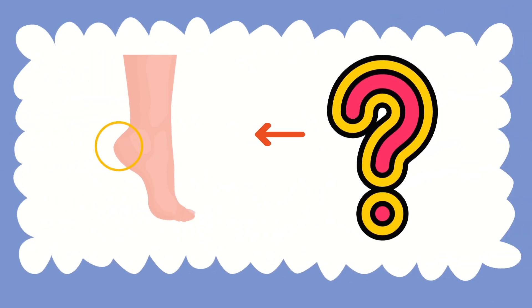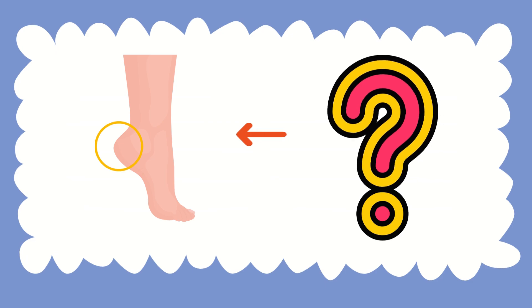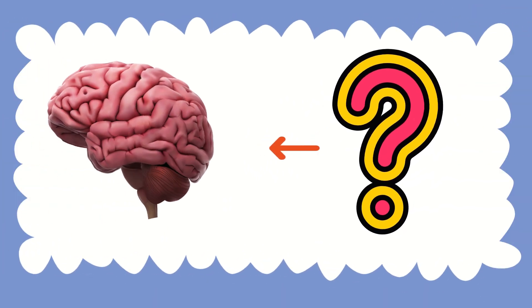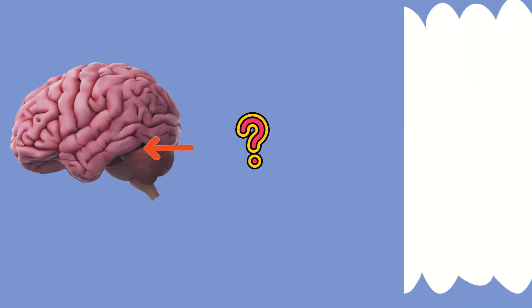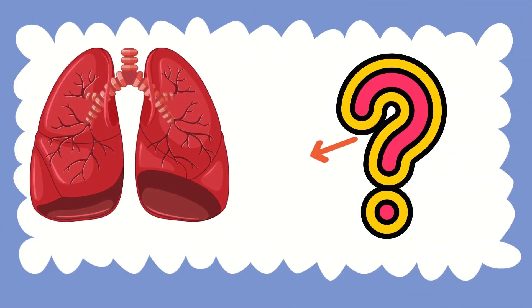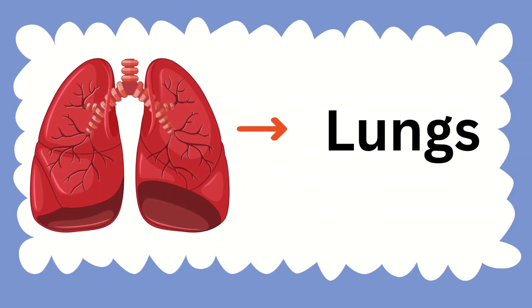Now look at this picture and tell the name. Can you guess the name of this internal organ? It's a brain. Now look at the next picture and tell the name of this internal organ — these are lungs.